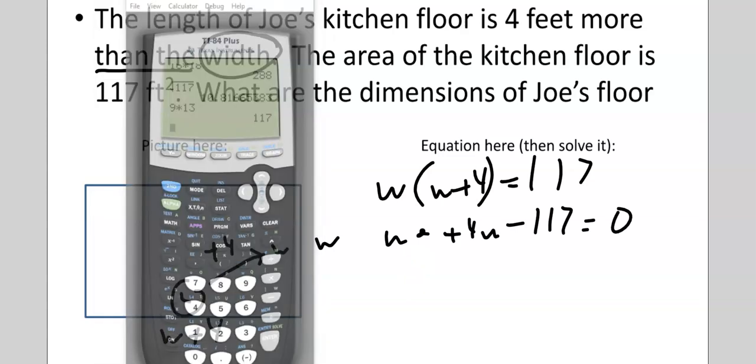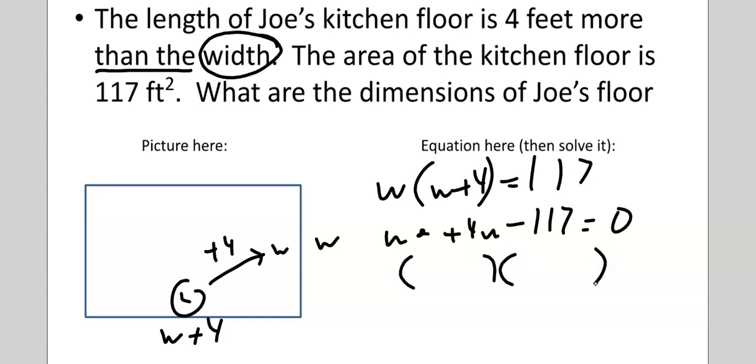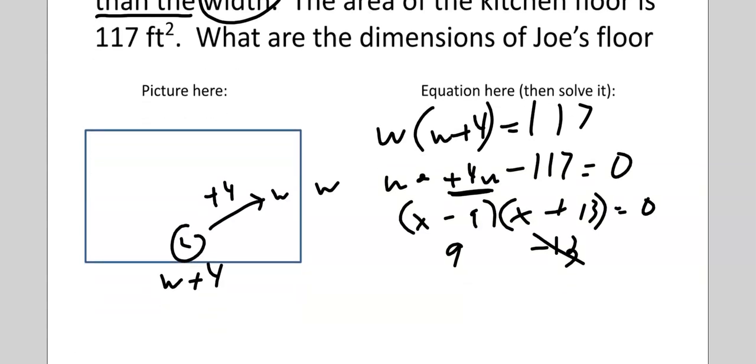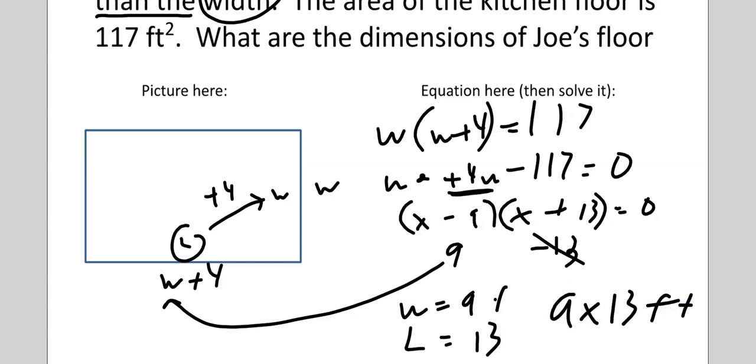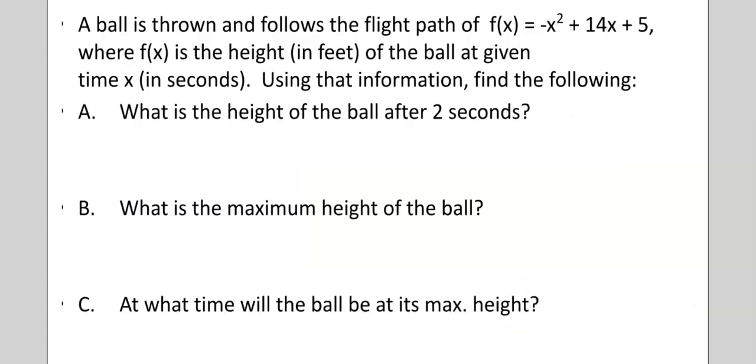So, again, I got 9 and 13. So, X, X, 9, 13. I want more positives and fewer negatives. Now, in this case, it is different. Even though it does not say they must be positive answers, we don't measure in negative numbers. So, therefore, my width is 9 and my length is 9 plus 4, which I plug in right here, 13. And you can also write it like this, 9 by 13.